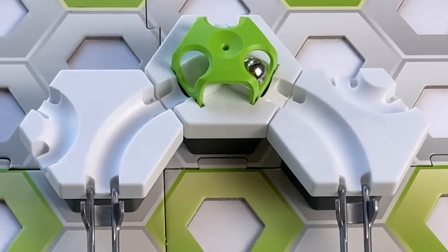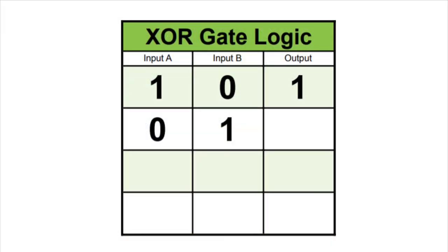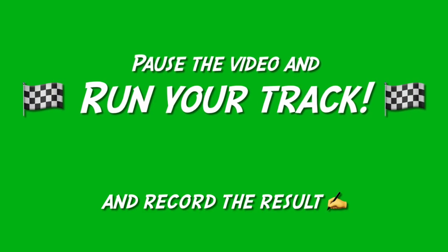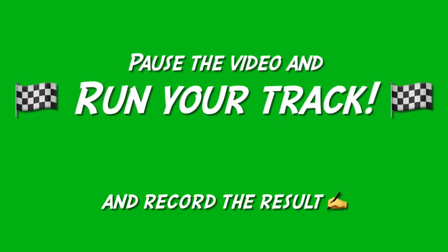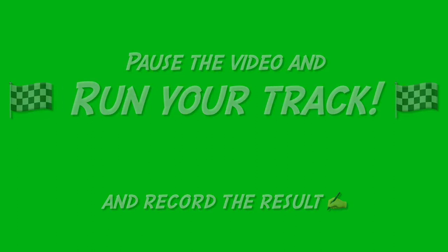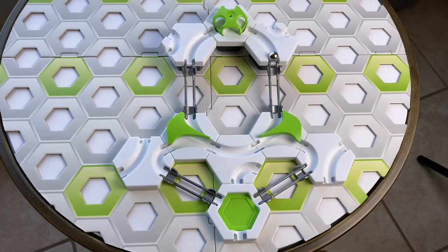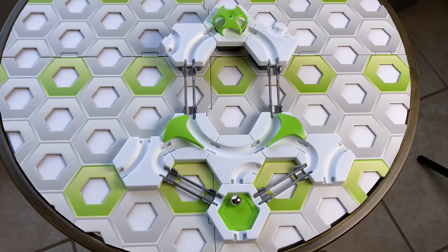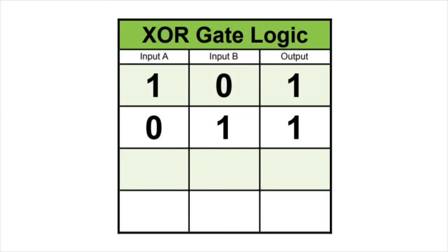Okay, now let's follow a similar procedure for the other three combinations of inputs. In your track, set Input A as 0 and Input B as 1. And in the second row of your logic table, write a 0 in the Input A column and a 1 in the Input B column. Now, you're going to do this on your own. Pause the video, run the track, and write the result in the second row of your logic table. Okay, what result did you get? You should have gotten a marble in the landing pad and wrote a value of 1 in the output column of row 2. So the second row of your logic table should read 0, 1, 1.